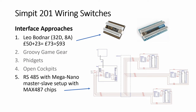For methods of interfacing all these cards, the Leo Bodnar board is a common one but I find it pretty expensive — they have 32-pin and 64-pin versions. Other options like Groovy Game Gear and Open Cockpits are not so common and pretty old technology. I tried a master-slave approach with MAX4587 chips but had a lot of failures — about 50% of the chips would die — so I gave up on that concept.